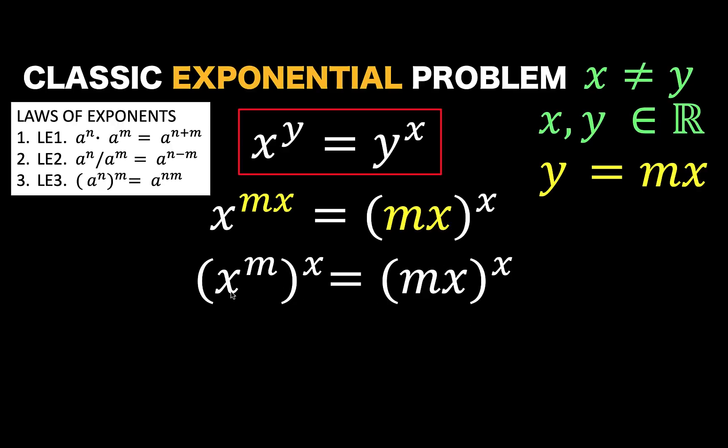Now, since we are solving for the variable x, we want to eliminate this exponent x by raising both sides of this equation to 1 over x, provided that x is not equal to 0, because division by 0 is undefined.